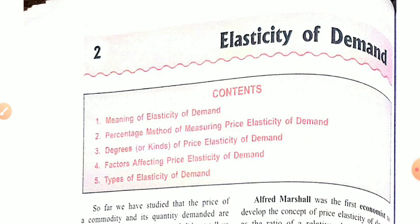In the previous chapter, we studied that the law of demand tells us about the direction of change in demand for a commodity in response to change in price. It basically shows the direction — like when price of a commodity increases, its quantity demanded decreases, and when price decreases, its quantity demanded increases.